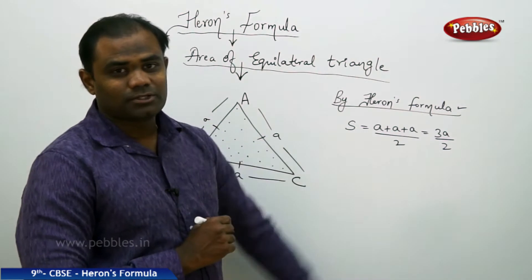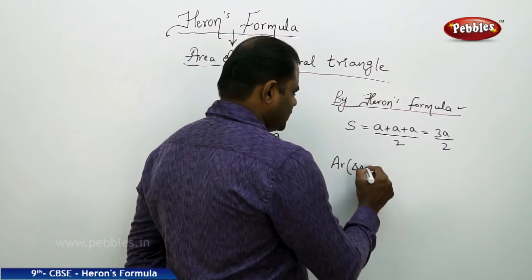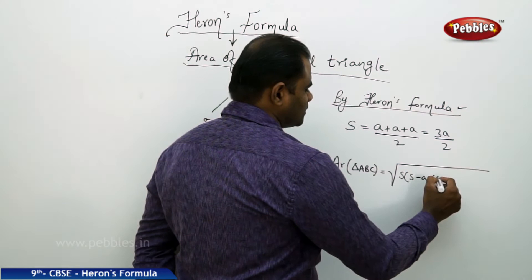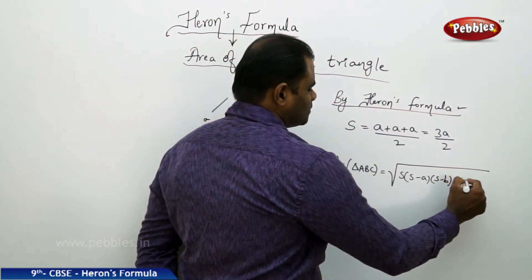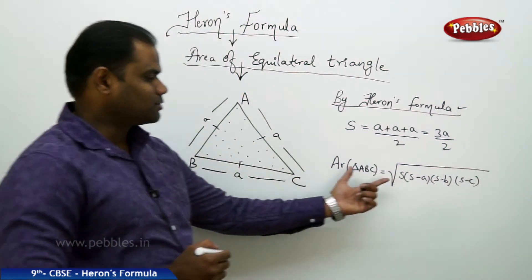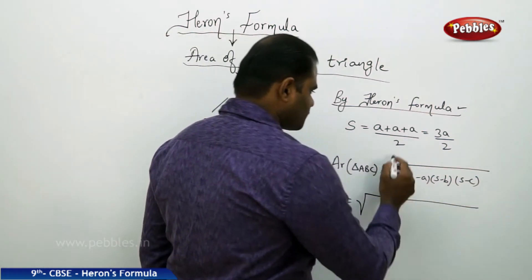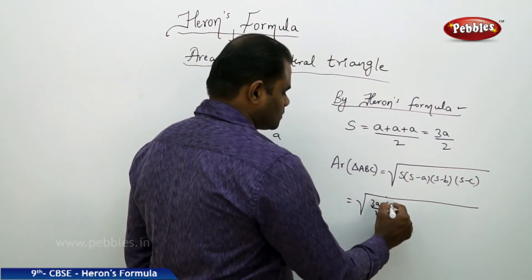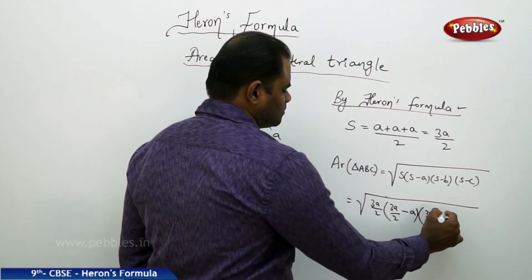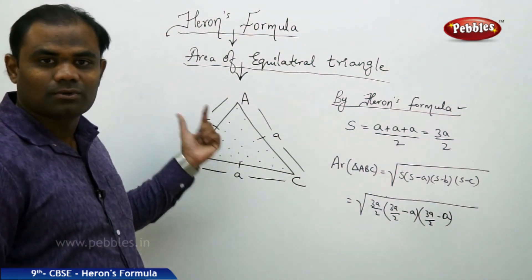Now S is 3A by 2 and my area of triangle ABC is given by root of S times S minus A into S minus B into S minus C. As my B and C are A, I can substitute now replaced with root of S into S minus A into S minus A, because my B also is A and my C also is A.